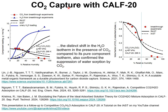For capture of CO2 from humid flue gases, CALF-20, or Calgary Framework 20, is of industrial significance. An important advantage claimed in the science paper by Shimizu, Rajendra, and co-workers is that the use of CALF-20 results in suppression of the water uptake, and this suppression of water is an important advantage for CO2 capture applications.